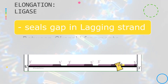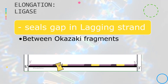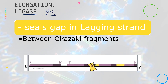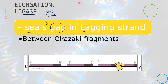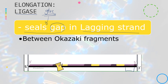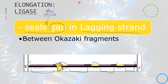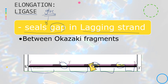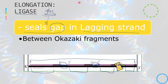The last step in elongation uses the enzyme ligase, known as the glue of DNA replication. Its job is to seal the gaps between the Okazaki fragments in the lagging strand, connecting all the fragments together to form one continuous DNA strand.